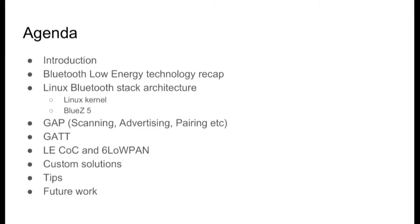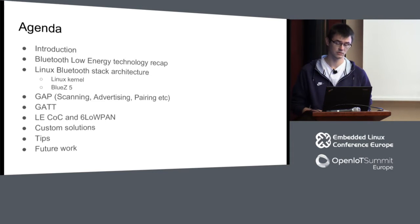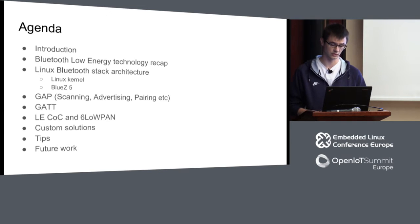I will present the way to do basic things with Bluetooth Low Energy using D-Bus APIs like scanning, advertising, pairing, and so on. Then I will present the GATT API that was recently promoted to stable APIs — that was a big thing. And a bit about connection-oriented channels and 6LoWPAN, then a few tips and tricks on how to customize Bluetooth stack on Linux, and some thoughts about future work.